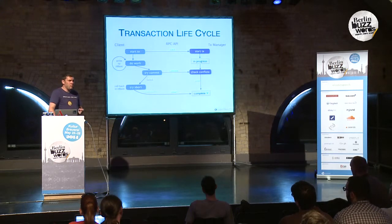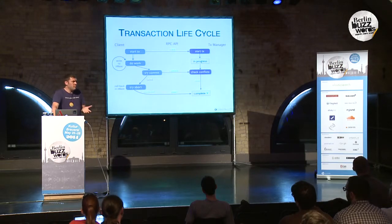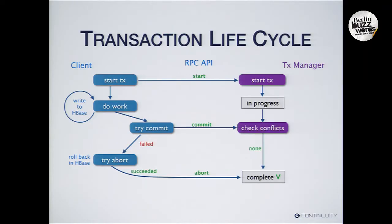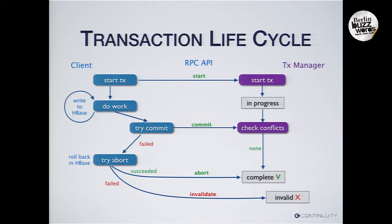It may happen that the rollback fails — the region server is down, a call times out, or the client crashes before it can roll back. In that case, the transaction gets invalidated. If the client encounters an error, it can tell the transaction manager it could not roll back. The transaction manager invalidates that transaction and remembers it, because there are some writes in HBase that are not valid and nobody is allowed to read them. If the client crashed, the transaction manager will eventually time out the transaction, which also becomes invalid.